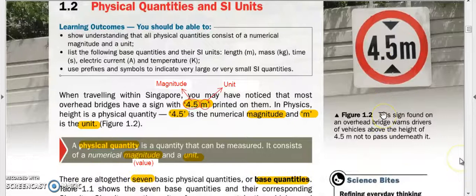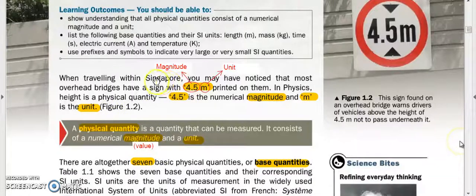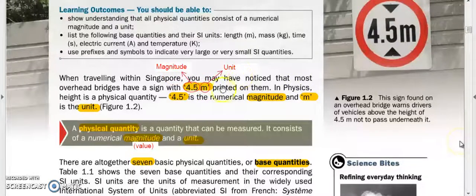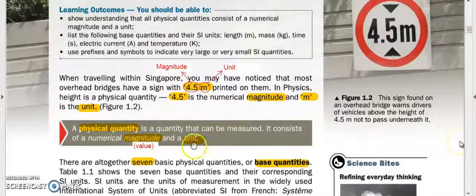Looking at physical quantities and units, it's important to highlight these parts. When we look at this road sign showing 4.5 meters, the number 4.5 represents the magnitude, and the symbol meter represents a unit. So a physical quantity consists of both magnitude and a unit. Magnitude simply means value.